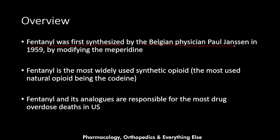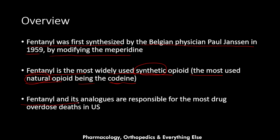Fentanyl was first synthesized by the Belgian physician Paul Janssen in 1959 by modifying meperidine. Both meperidine and fentanyl are from the same family — the phenylpiperidine family. Fentanyl is the most widely used synthetic opioid, while the most widely used natural opioid is codeine.